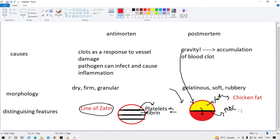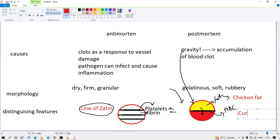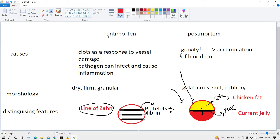We write it with red because it's important: chicken fat. And this is the normal RBC, and we call it currant jelly. It's a jelly that's red in color. So now you know: antemortem clot we have line of Zahn, postmortem clot we have chicken fat and currant jelly. Both start with C, so maybe it will make it easier to remember.